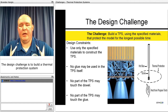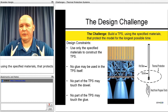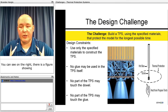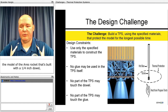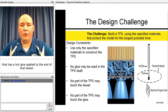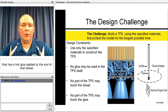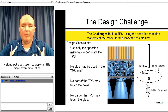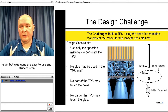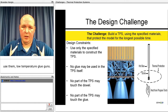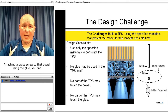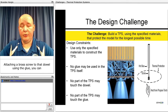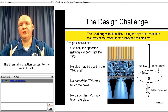The design challenge is to build a thermal protection system using specified materials that protect the model for the longest possible time. You can see on the right a figure showing the Ares rocket model, built with a quarter-inch dowel that has hot glue applied to the end, either using a melting pot or a glue gun. A brass screw is attached to that dowel using the glue, and hex nuts and washers are used to attach the thermal protection system to the rocket itself.